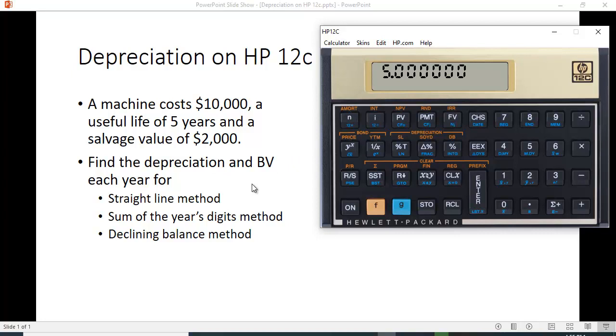If you want to calculate the straight line method, that's an easy one. $10,000 minus the salvage value of $2,000 is $8,000, then divide by the number of years, five, which equals $1,600 a year. It's the same every year.